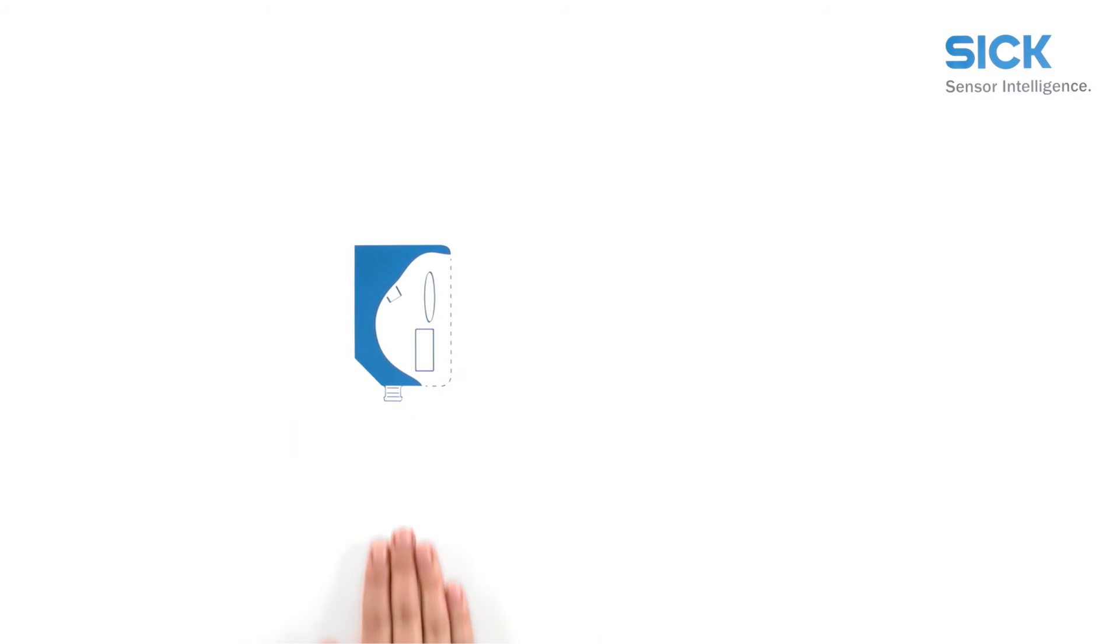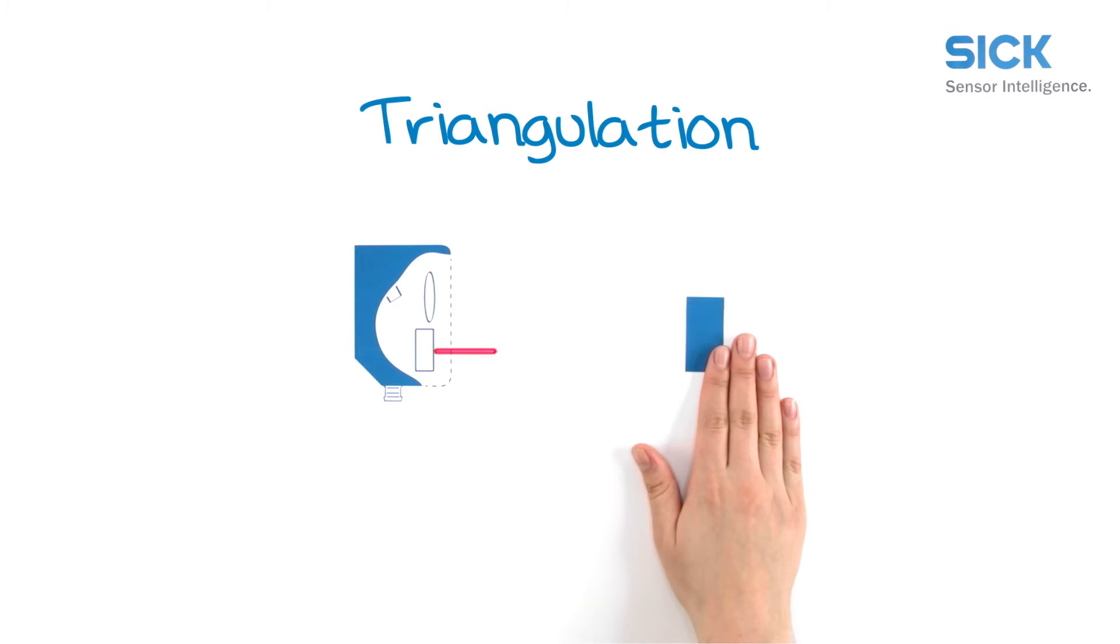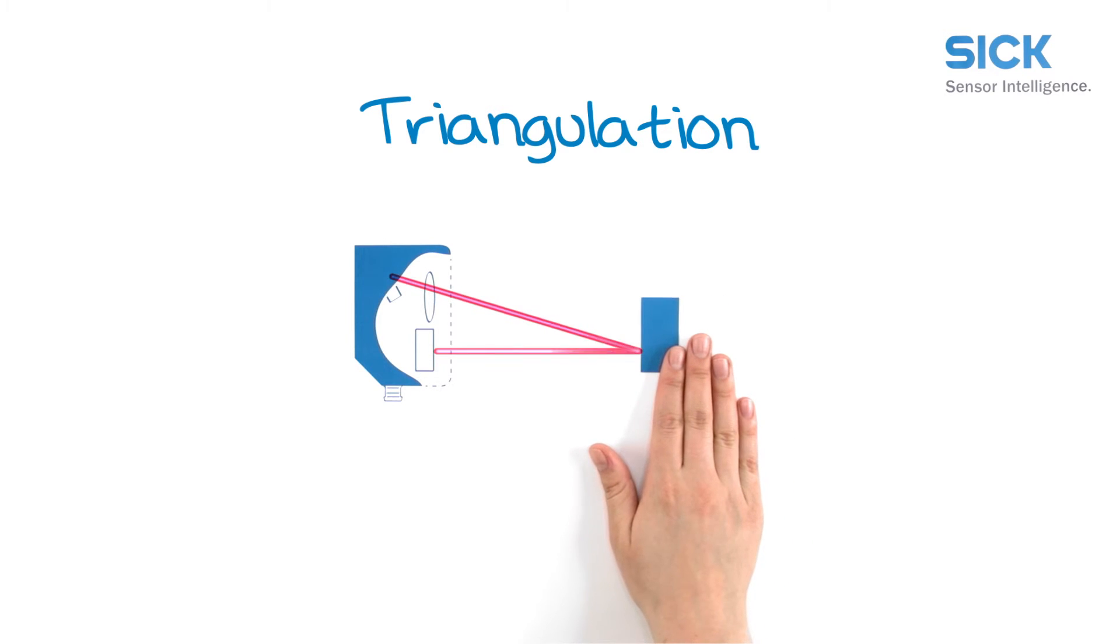To measure that change accurately, the sensor uses the triangulation principle. A point of light is projected onto the object to be measured. A lens focuses the reflected light and the light is captured by a light-sensitive receiver. Based on the angle between the send and receive direction, the position of the object is triangulated.